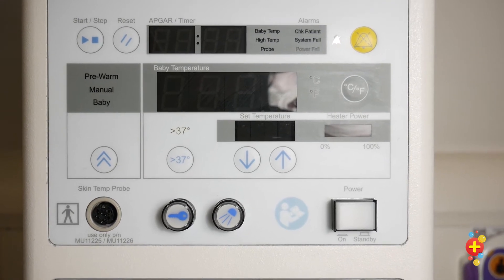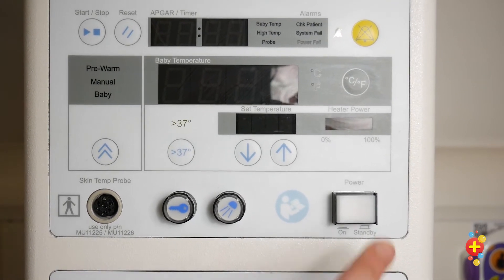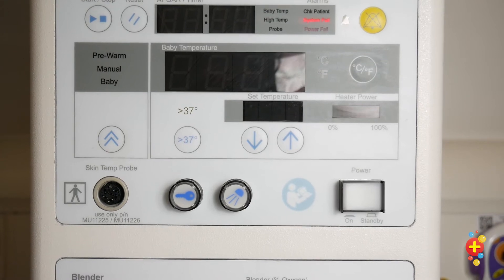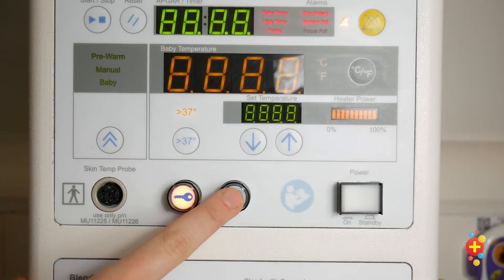Once the resuscitaire is plugged in and connected to the oxygen and air, we'll start by turning it on and then switching on the light so we can see what we're doing.